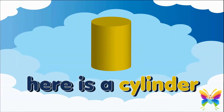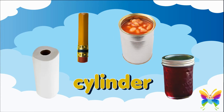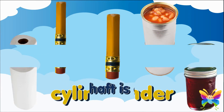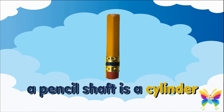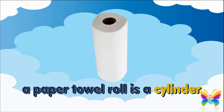Here is a cylinder. It has this shape. These are things that have the shape of a cylinder — you can see them every place. A pencil shaft is a cylinder, a can of beans is a cylinder, a paper towel roll is a cylinder.